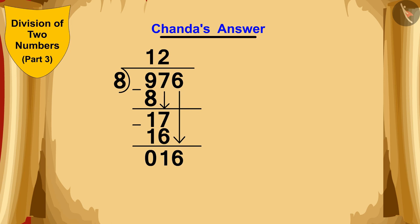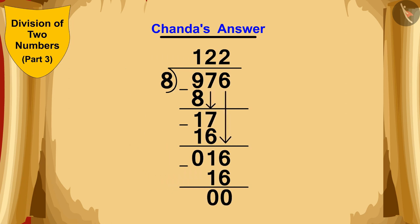Now, Chanda wrote the next number 6 next to the 1. Once again, she thought that 8 times 2 is 16. So she could divide 16 by 8. She quickly wrote 2 above and at the bottom she wrote 16. 16 minus 16 is 0. In this way, Chanda got the answer of 122 rows.